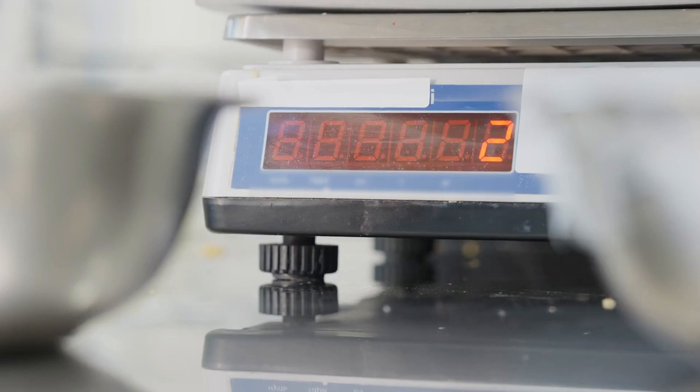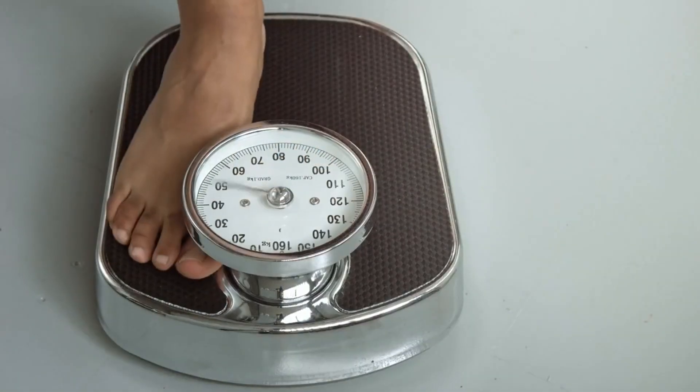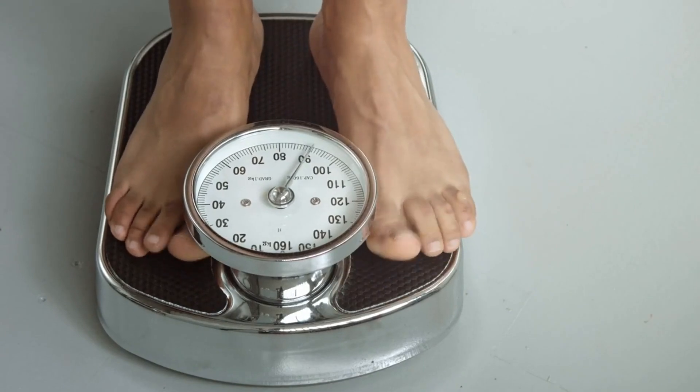Rather than basing the kilogram off of an object, a platinum iridium alloy cylinder about the size of a golf ball, the new definition uses a constant of nature to set the unit of mass. The change replaced the last physical artifact used to define a unit of measure.